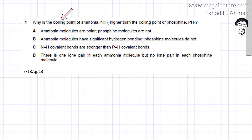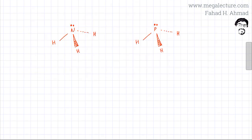The following question states: why is the boiling point of ammonia, NH3, higher than the boiling point of phosphine? I've drawn both molecules here in three-dimensional space.